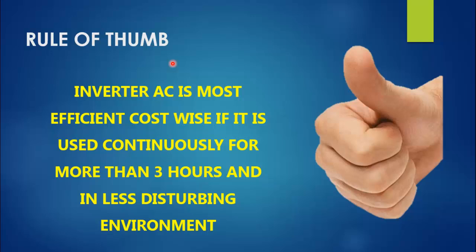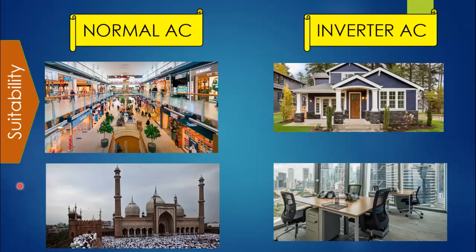At the end of this video, here is a rule of thumb: the inverter AC is most cost-efficient if used continuously for more than three hours in a less disturbing environment. The best example is using it in a bedroom overnight — it will definitely save you a lot of energy. In my experience, for offices and homes the inverter AC is more efficient cost-wise, whereas for public places the normal AC would be more efficient as it provides faster cooling. I hope you liked this video — stay tuned and don't forget to subscribe. Thank you for watching.